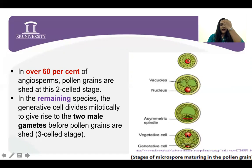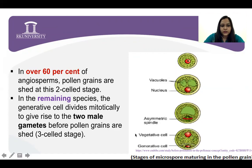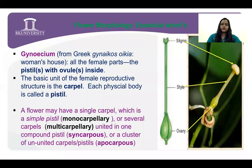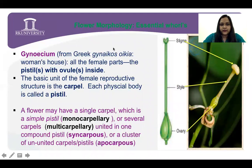When pollen grains are released or dehisced from the anther, they are in a two-cell condition in 60% of scenarios. But in the rest, it may undergo mitotic division and give rise to male gametes. Before pollen grains are shed, they may be in a three-cell condition.